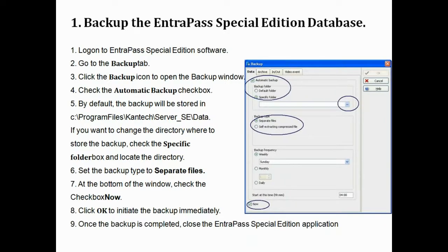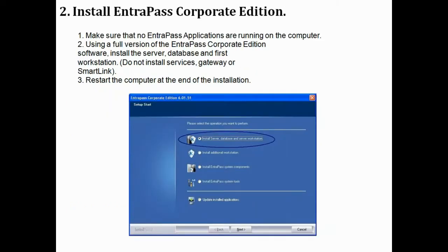Starting now with the steps. We're going to log in to Entrapass Special Edition and make a backup of the system. Whenever you're making changes, always make a backup first for safety. Log in to Entrapass, go to the Backup tab, and make a backup. After that, find the Corporate installer at the same version as the Special Edition, and install it — selecting the first option: Install Server Database and Server Workstation.